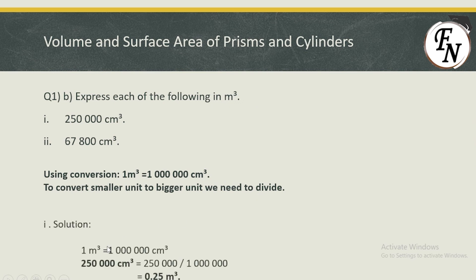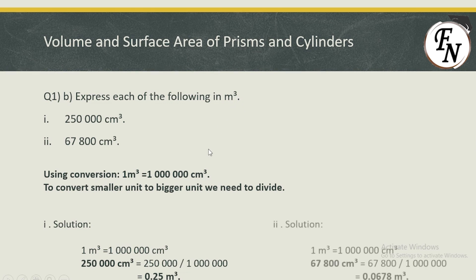For 250,000 centimeter cube, the conversion is 1 meter cube = 1,000,000 centimeter cube. We divide 250,000 by 1,000,000 because we are converting smaller unit to bigger unit. The zeros cancel and we obtain 0.25 meter cube. For 67,800 centimeter cube, using the same conversion and dividing by 1,000,000, we obtain 0.0678 meter cube.